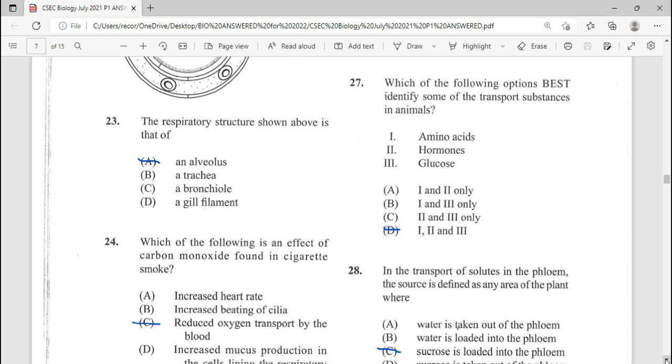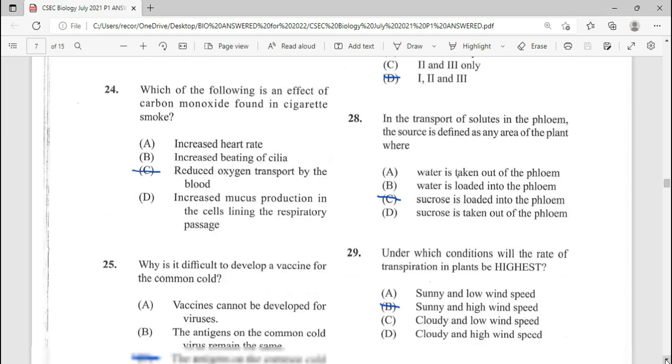23, repeated question. The respiratory structure shown above is that of the alveolus. Number 24 is an effect of carbon monoxide found in cigarette smoke. It reduces oxygen transport by the blood. Answer there is C.